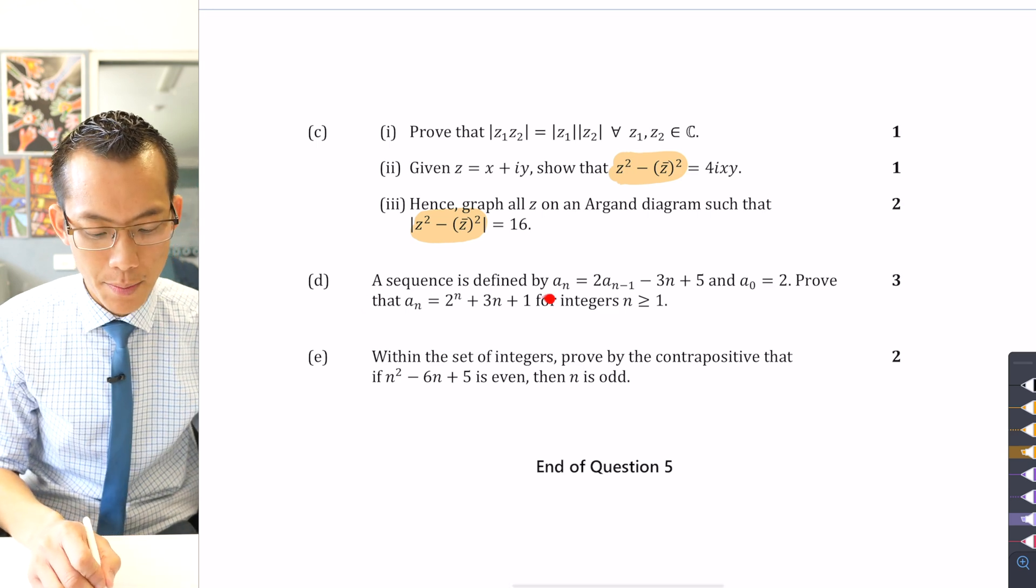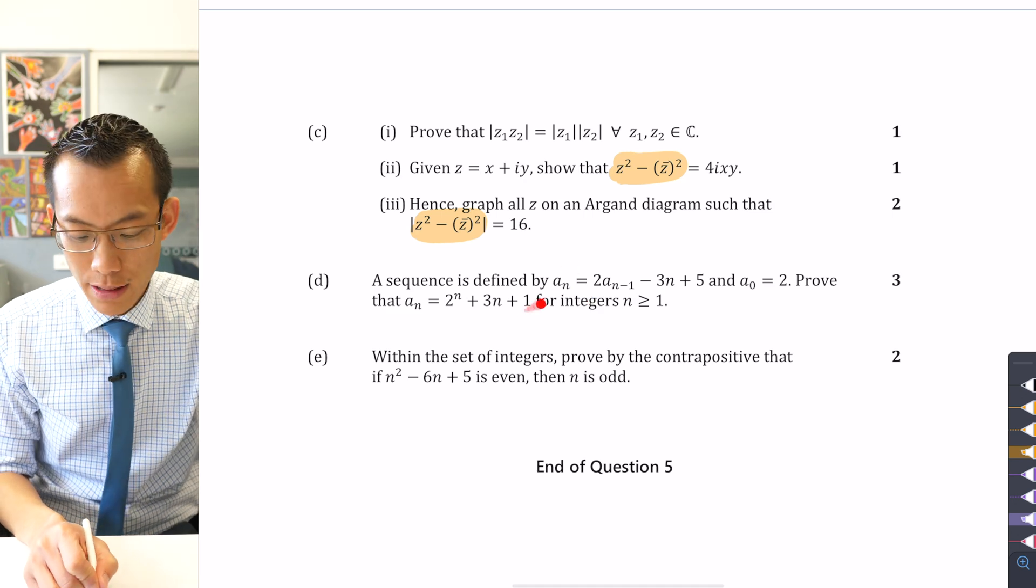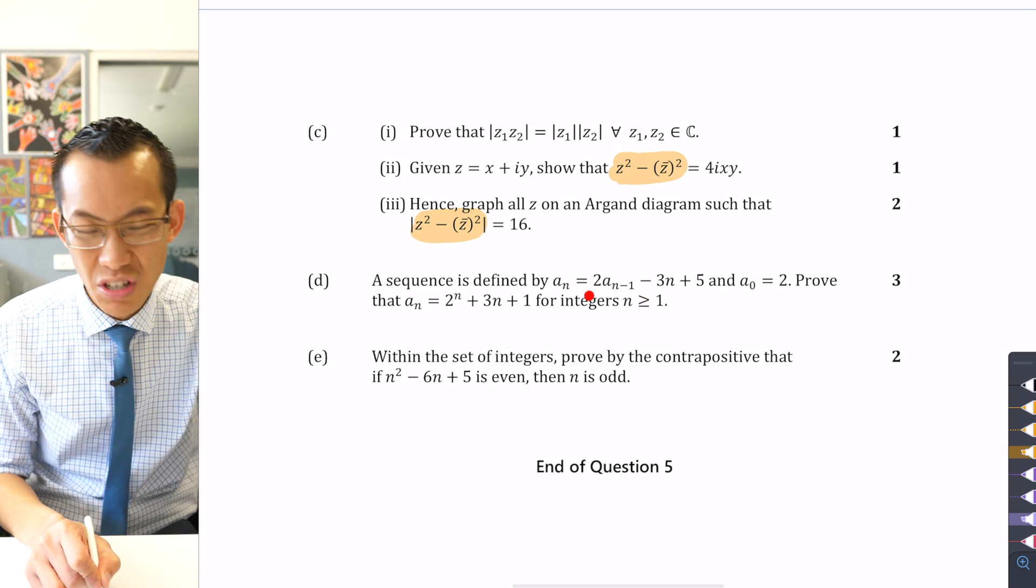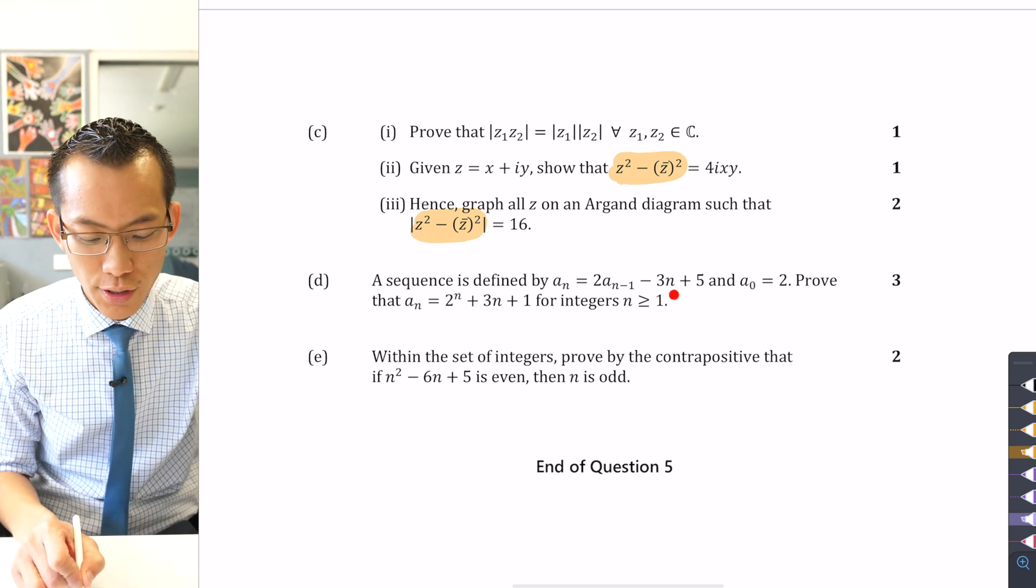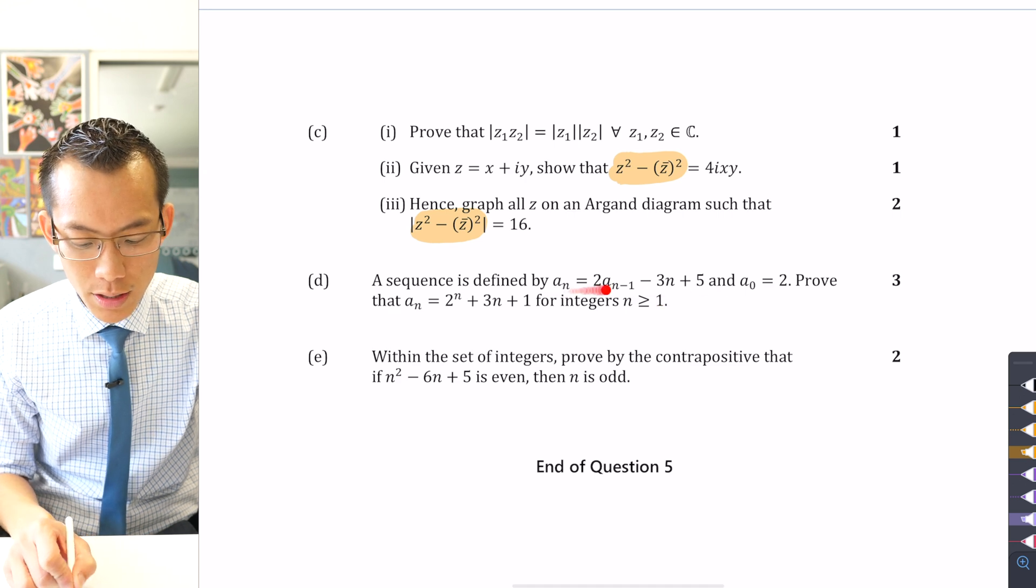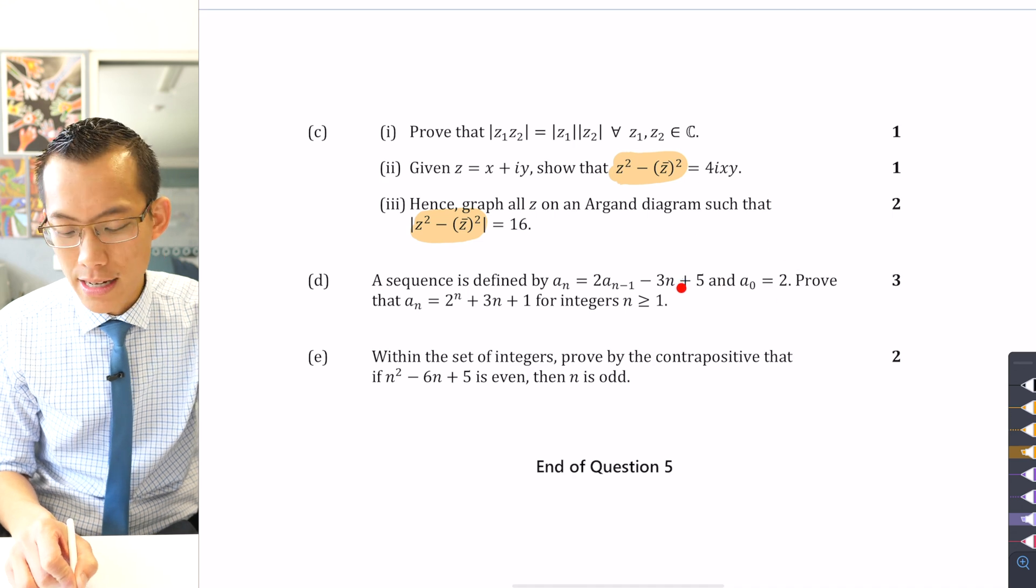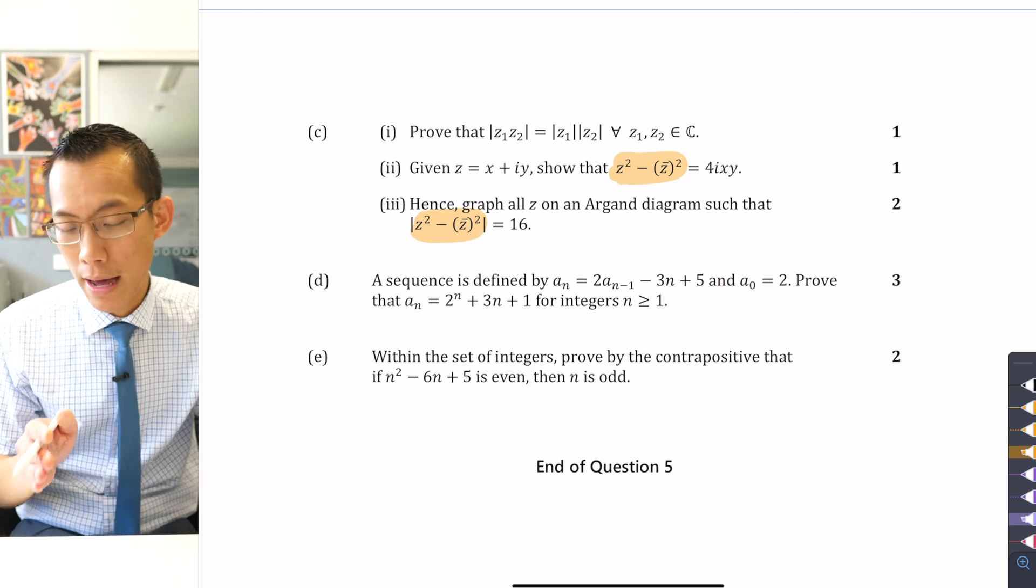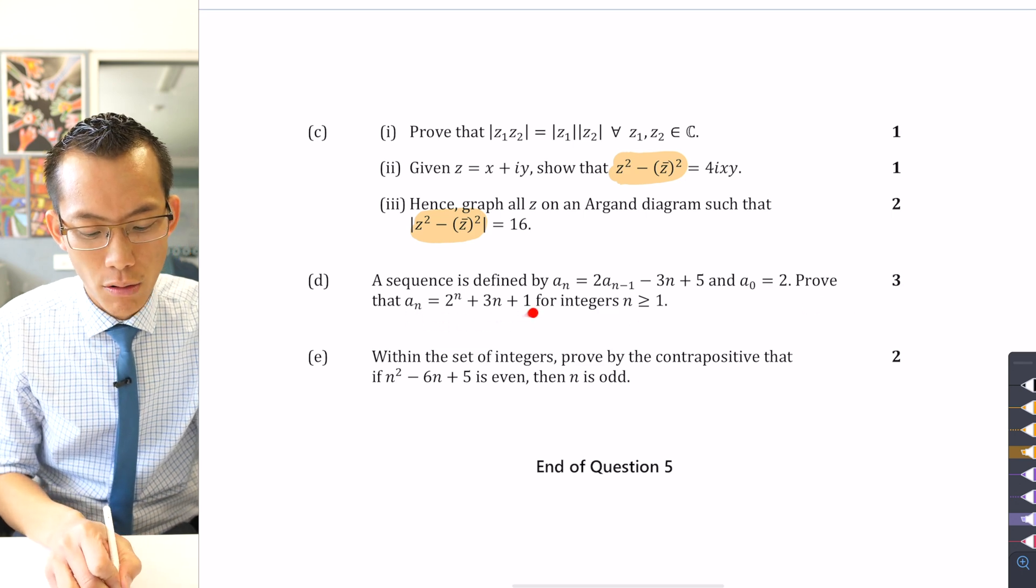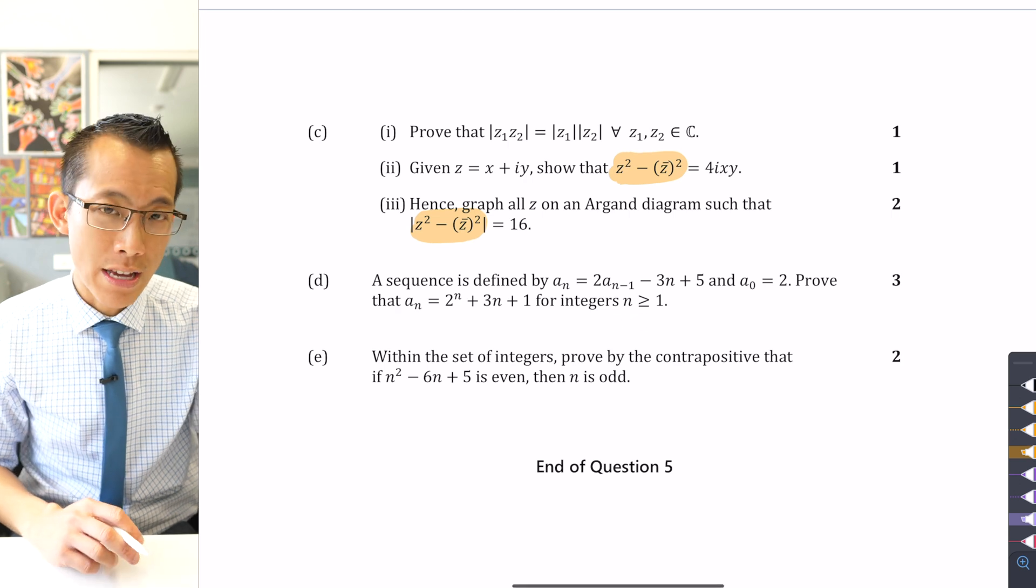It says a sequence is defined by a_n equals, and then you can see you get a_n by looking at the previous term a_{n-1}. You make some changes to it—you double it, and then you do some other stuff to do with whatever part of the sequence you're up to. Because it's a recursive sequence you need to know a starting point like a seed. You start at 2 and then just keep on doing the pattern. What you're asked to prove is that this is the general formula for integers n greater than or equal to 1.